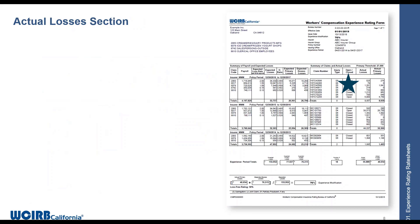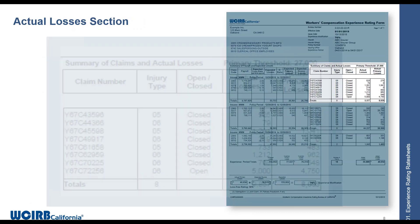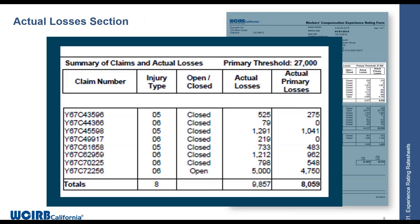On the right side is the actual losses section. This information comes from claims reported on the USRs. You'll see the claim number, the injury type, whether the claim is open or closed, and then the actual losses and actual primary losses. The difference is that actual primary losses do not include the first $250 of the claim. The primary threshold at the top right comes from a primary threshold worksheet by classification code.